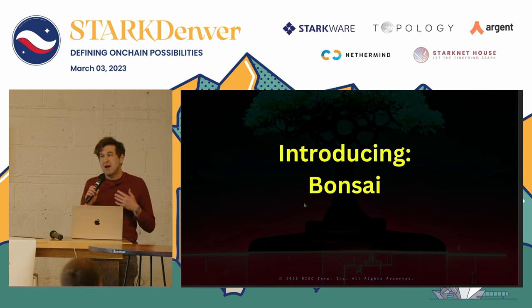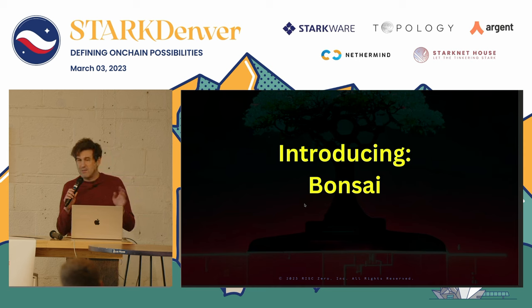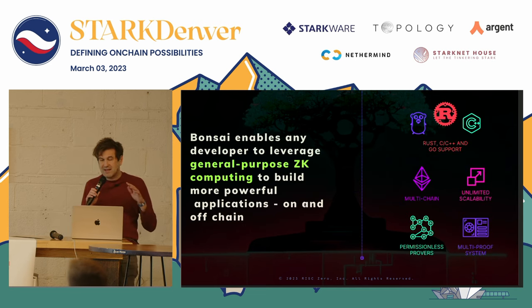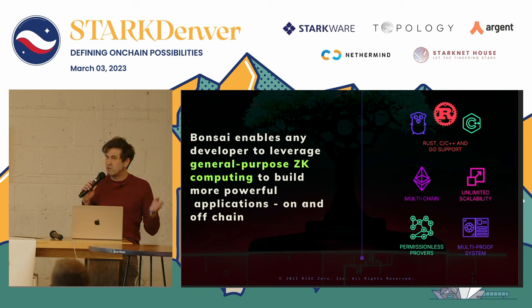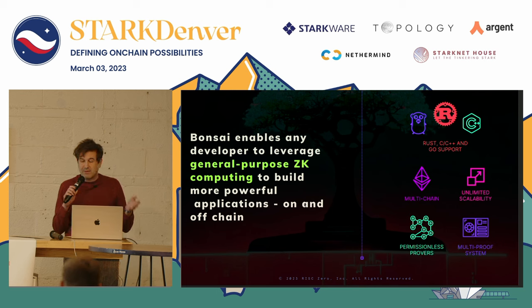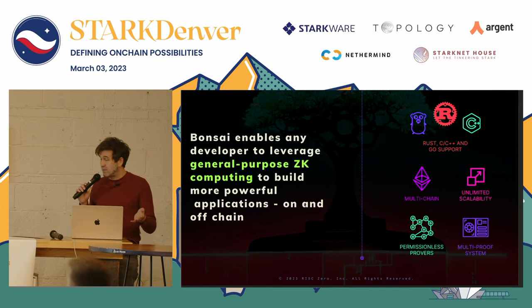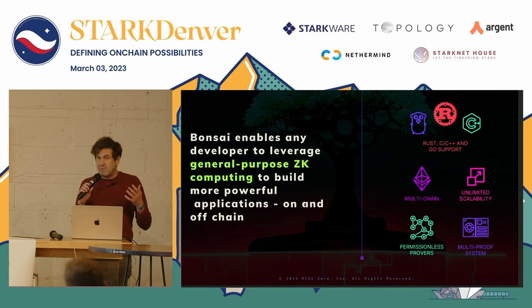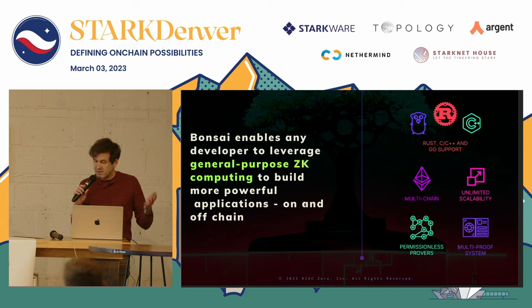In particular, we are going to be supporting StarkNet as well as Ethereum potentially directly, although that might take a bit of time, and then other chains as time goes on. Lots of people want to leverage more general-purpose computation to build applications. With Bonsai, it's possible to take Rust currently — and we are also going to be adding support for C++ and Go code — and translate those into zero-knowledge proofs that are available on different chains, with the number of supported chains expanding over time.